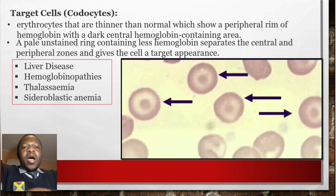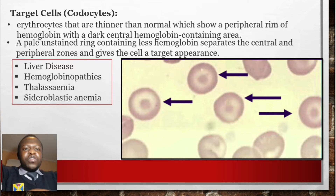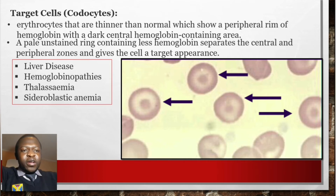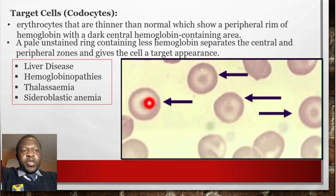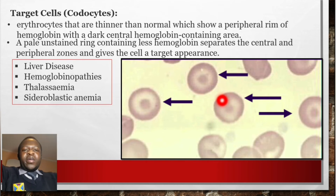Target cells are erythrocytes that are thinner than normal. They show a peripheral rim of hemoglobin with a dark central hemoglobin-containing area, separated by a pale ring with less hemoglobin — giving the cell a target appearance. Target cells, also called codocytes, are usually found in liver diseases, hemoglobinopathies, thalassemia, and sideroblastic anemia.